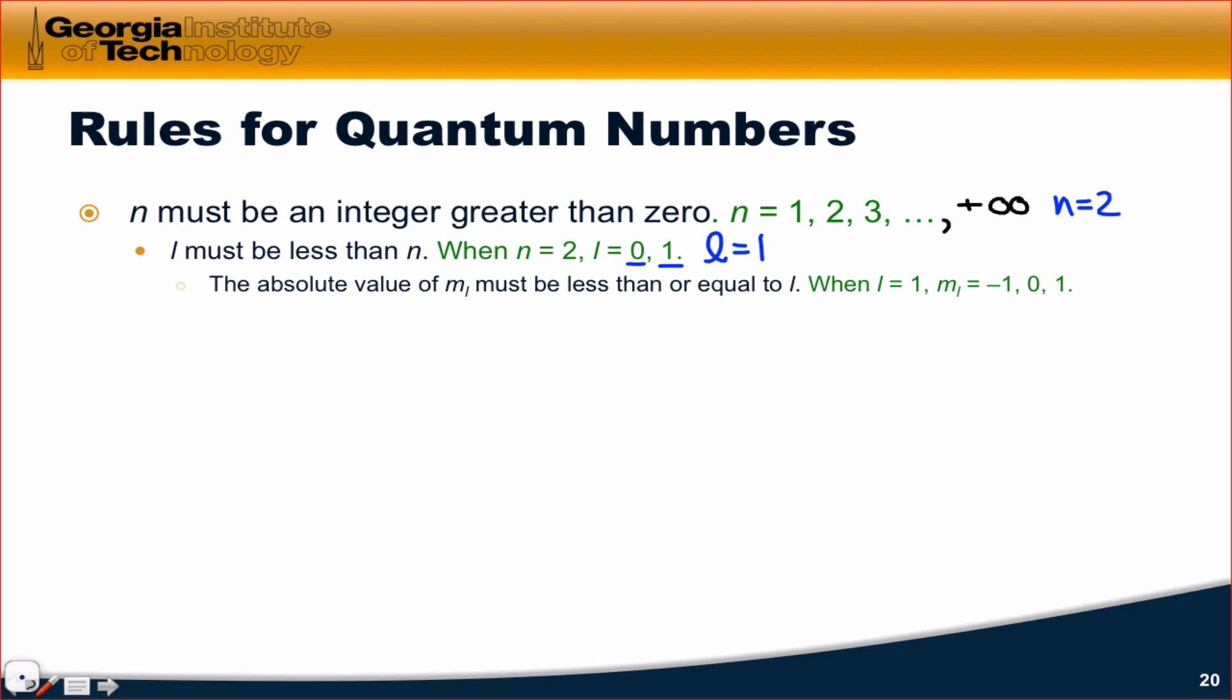Once we've chosen a value for l, say l equals 1, m sub l's absolute value must be less than or equal to l. In mathematical form, m sub l's absolute value must be less than or equal to l. So, for example, when l equals 1,